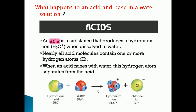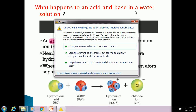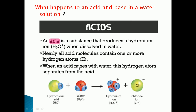Now we are going to see what happens to an acid or base in a water solution. When an acid is mixed with water, the acid produces hydronium ions. Nearly all acid molecules have one or more hydrogen atoms. When acid is mixed with water, these hydrogen atoms - hydronium ions - will be separated from the acid.